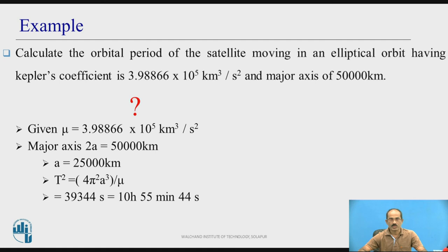If I substitute all the values, T becomes equal to 39,344 seconds. I need to convert this in terms of hours, minutes, and seconds. First, divide it by 60 to get minutes, and then again divide by 60 to get hours. So it comes to around 10 hours 55 minutes and 44 seconds.